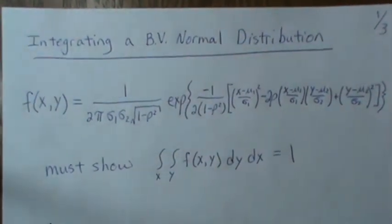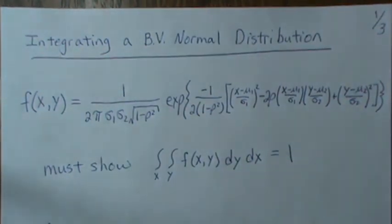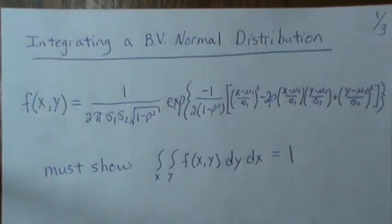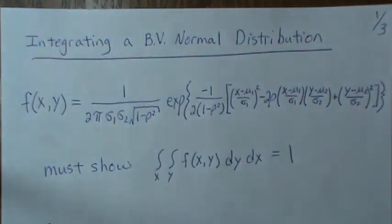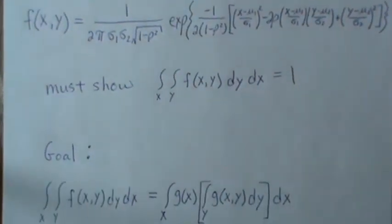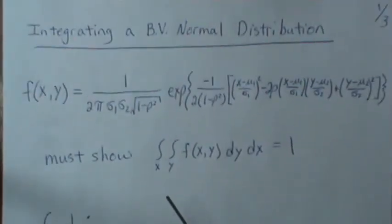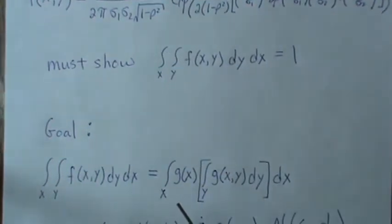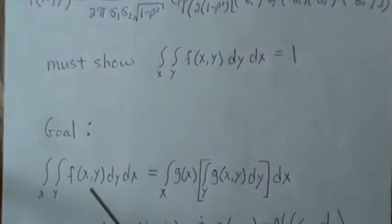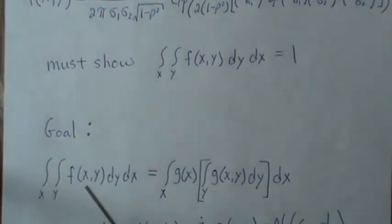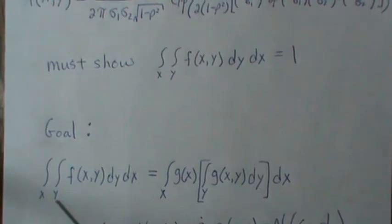A lot of times in statistics, when solving problems, you try to reshape the original expression into something that looks like another known distribution, and then it's much easier to integrate. Our goal is to take the bivariate normal and reshape it into two different distributions — g of x times g of x|y — because when integrating with respect to y first, we can pull out everything that has an x, since x is constant with respect to y.